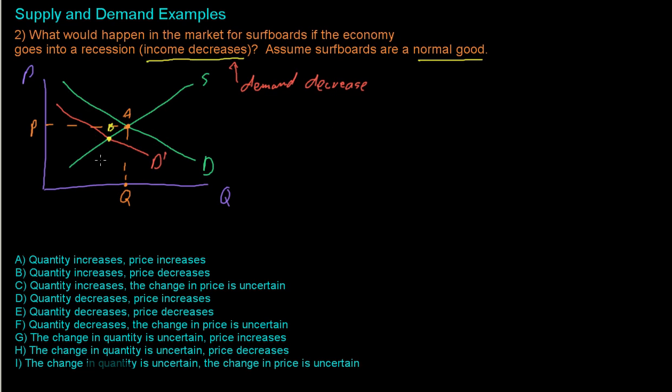And that quantity is going to drop. So we'll go from Q to Q1, and also the price of surfboards is going to drop, P1. So our answer is that quantity is going to decrease, and price is also going to decrease, which is E.